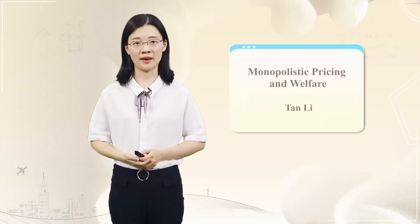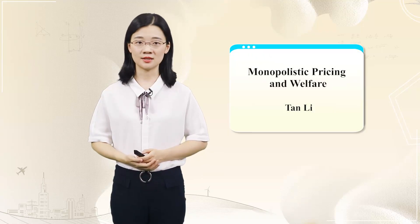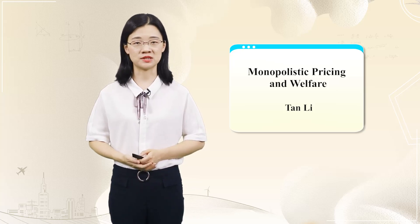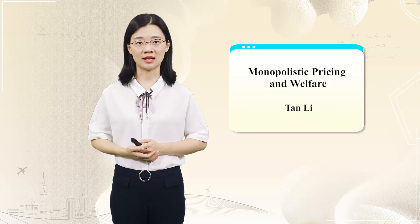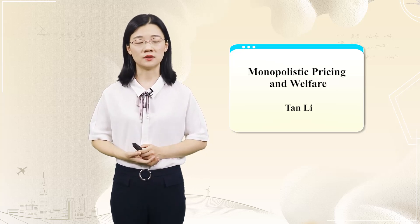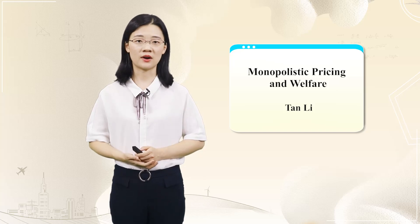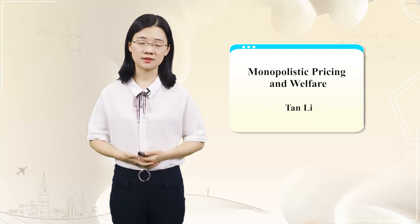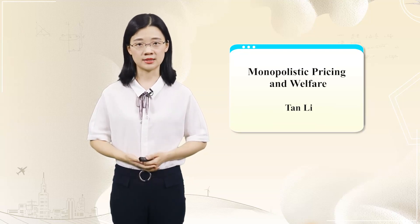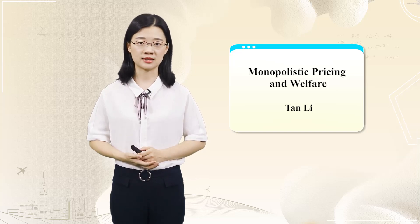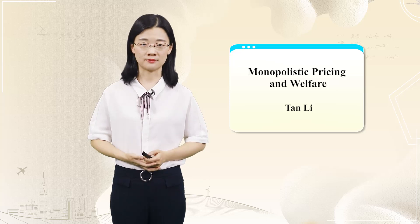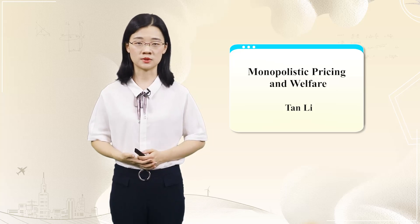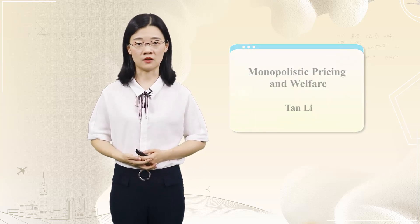Hello everyone, welcome back. In the last lecture, we introduced the basic concept of monopoly and the reasons for its formation. We already know that the profit maximization decision of the monopoly firm still needs to satisfy the condition of MR equal to MC. Today, we continue our study of monopoly pricing and discuss the welfare effects associated with monopoly pricing. First, let's look at the relationship between the pricing of monopoly firms and the own price elasticity of demand.